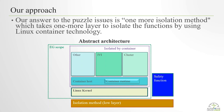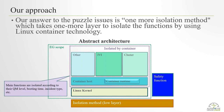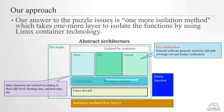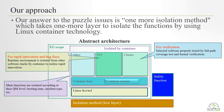Our answer to the puzzle issue is one more isolation method, which adds one more layer to isolate the function by using Linux container technology. Main functions are isolated according to their QM level, booting time, incident type, and desktop. The cluster container is for verification — it includes selected software, properly tested by full-path coverage tests and formal verifications. IVI is for rapid innovation under a bug-fix container. The runtime environment is isolated from other software by container to realize rapid innovation. We call this architecture the QMI solution.